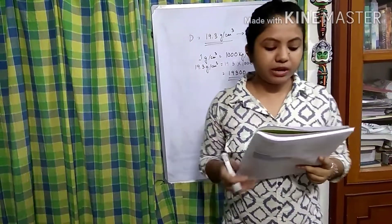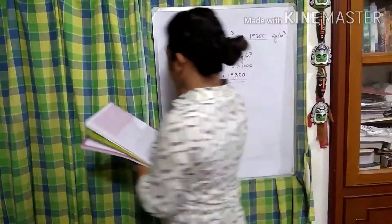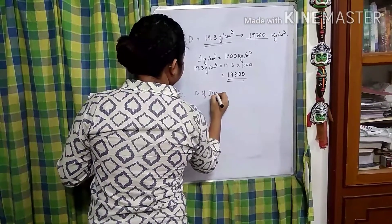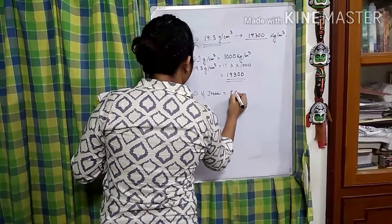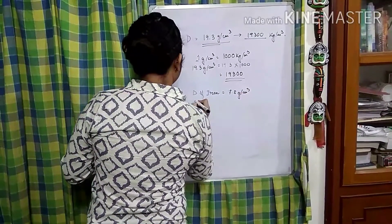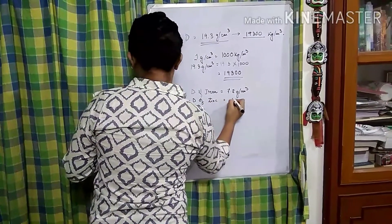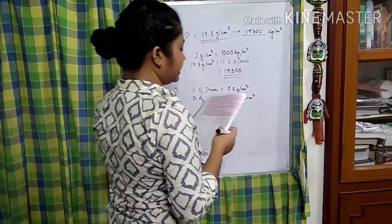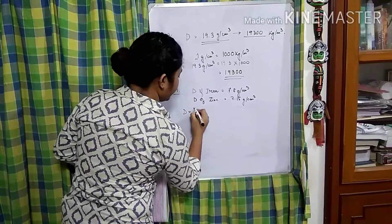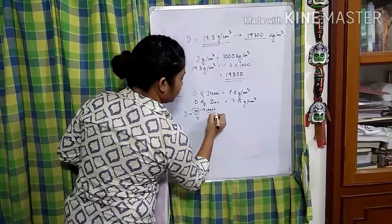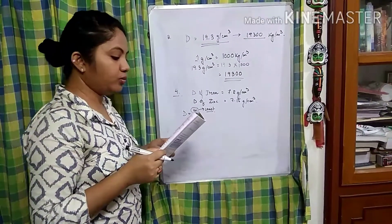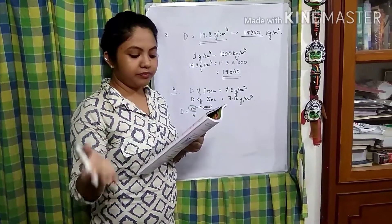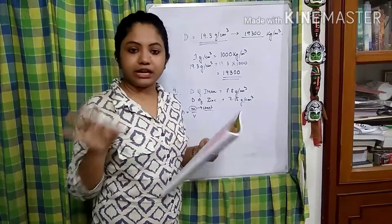Now question number 4: the density of iron is 7.8 gram per centimetre cube and the density of zinc is 7.15 gram per centimetre cube. For the same mass, we need to determine: A — volume of zinc is more than iron, B — volume of iron is more than zinc, C — both are the same, D — nothing can be said. Options C and D will be nullified because according to the relation, when mass is constant, volume will vary.